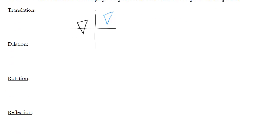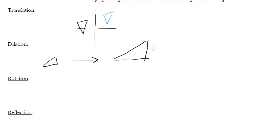A dilation is either magnifying or shrinking a shape. If I've got a triangle and I dilate it three times, it just makes the triangle three times as big. Notice this is where we get similar triangles from — by dilating triangles, making them bigger or smaller, but keeping them in proportion.